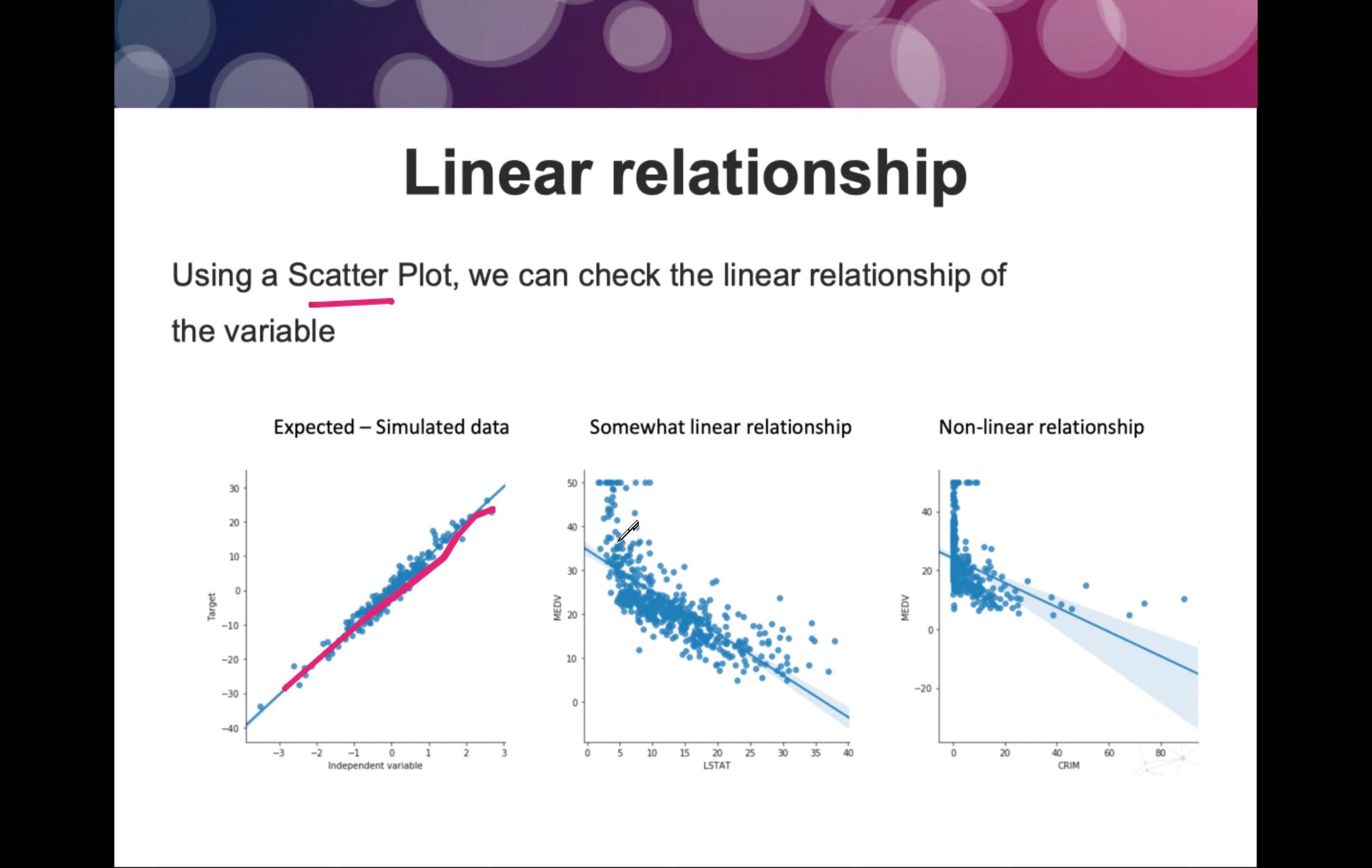This is somewhat linear. Any particular plot on a scatter plot, when represented through a line, is said to be a linear relationship. That means if a line can make a good fit to that particular plot, that is a linear relationship.